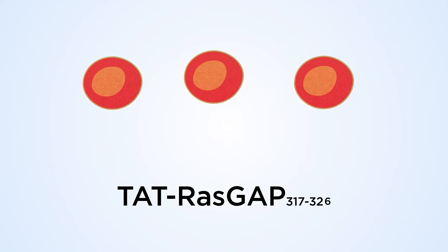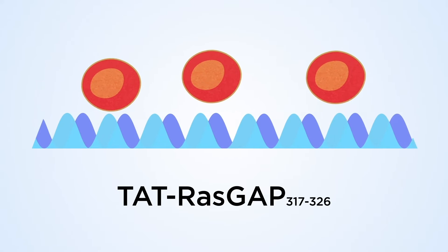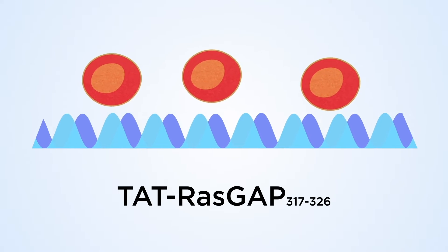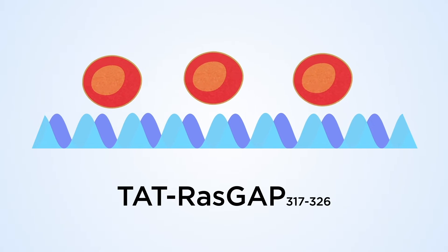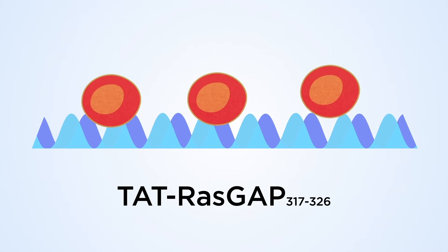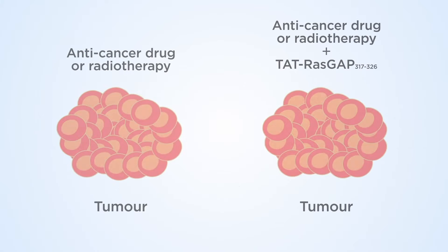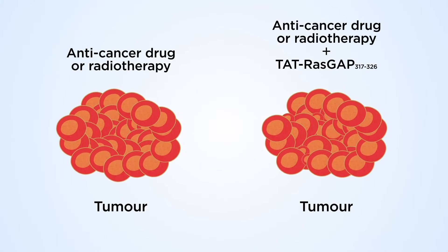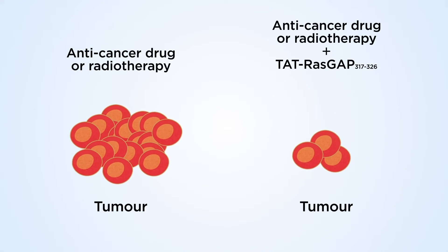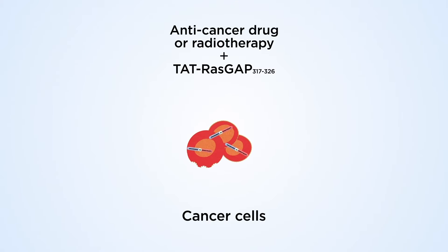TAT-RAS-GAP has several anti-cancer activities. It increases adhesion of cells to their substratum, reducing the invasive properties and metastatic potential of cancer cells. It sensitises tumours to anti-cancer therapies, and at higher concentrations, it can kill cancer cells.